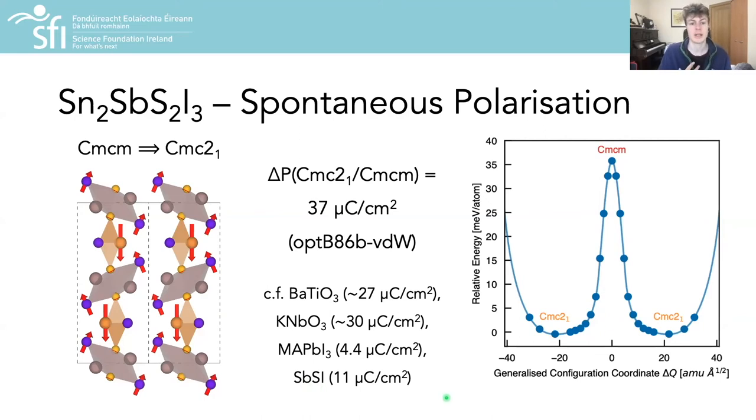We also calculated the ferroelectric switching barrier using the nudged elastic band method in combination with the distortion symmetry method to ensure the minimum energy path between configurations was identified. In doing so we find a moderate energy barrier to switching of the polarization direction, just over 35 millielectron volts per atom in this case, with CMCM representing the transition state.